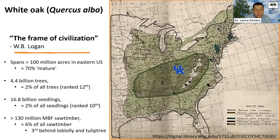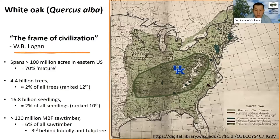White Oak is so important to us. It's part of the oaks that the author William Bryant Logan said were really the frame of civilization, in an excellent book he wrote showing how oaks were critical. And in many cases, White Oak was a critical part of advances in human civilization.